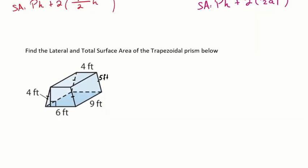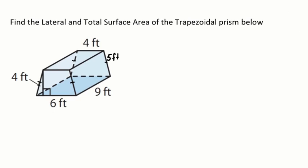Let's try one of these problems. Find the lateral and total surface area of the trapezoidal prism shown. We start with lateral area, which is perimeter times height. First, we identify the height of the prism — the distance from one base to the other — which is nine. Second, we find the perimeter of the base. The side length of five appears twice, the top base is four, and the bottom is ten.